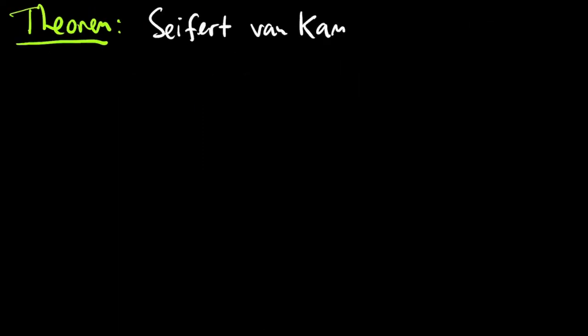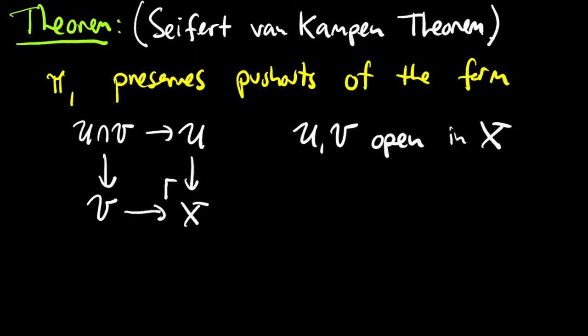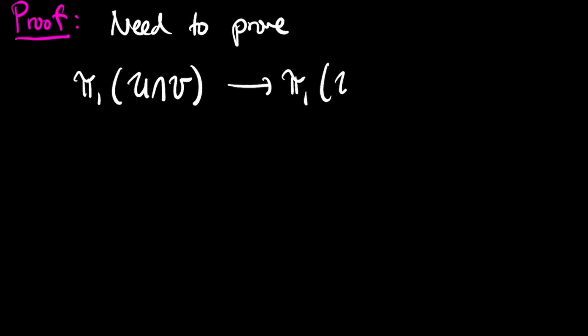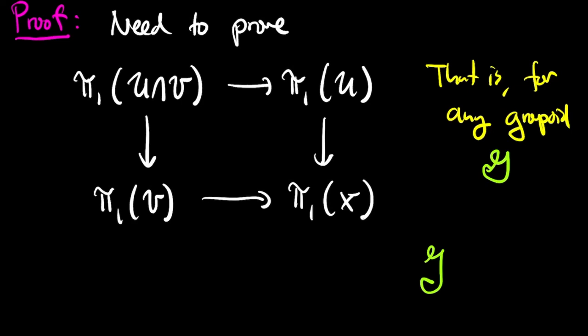To be more precise, if you write your space X as the union of two open sets, U and V, then you can express X as a pushout in the category of topological spaces, and π₁ preserves those kinds of pushouts. In order to prove it, you have to apply the fundamental groupoid functor to the pushout diagram. This gives you a commuting square, and then you have to prove that that commuting square of groupoids is actually a pushout in the category of groupoids, which means that for every groupoid G, and every map from π₁ of U into G and π₁ of V into G that fits together with the maps from π₁ of the intersection, that there's a unique map from π₁ of the space X into G.